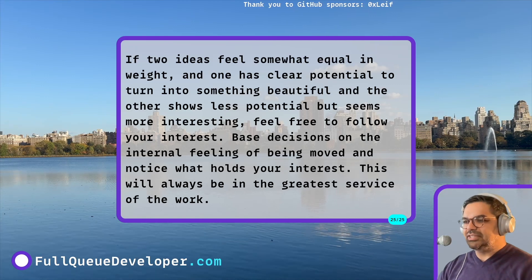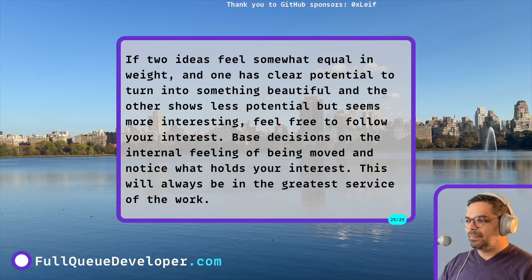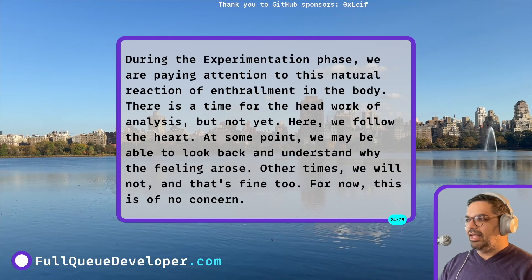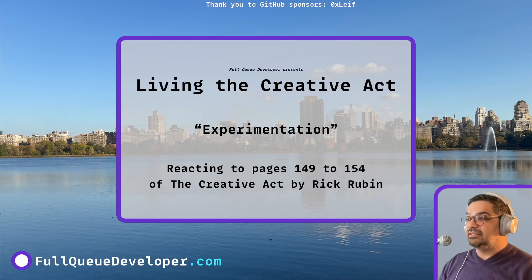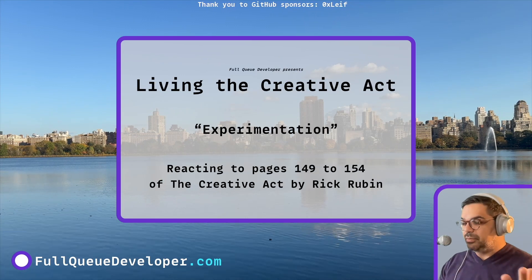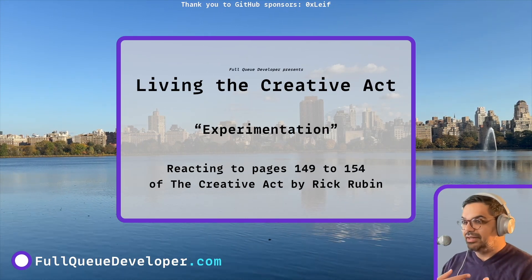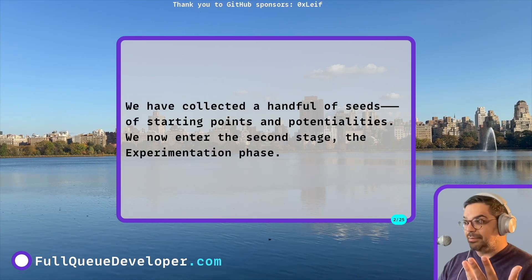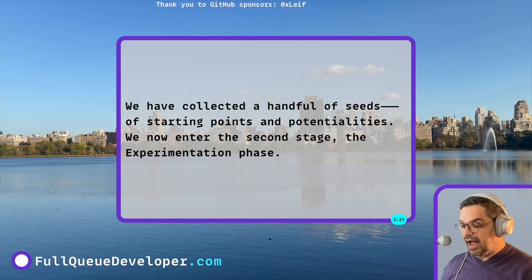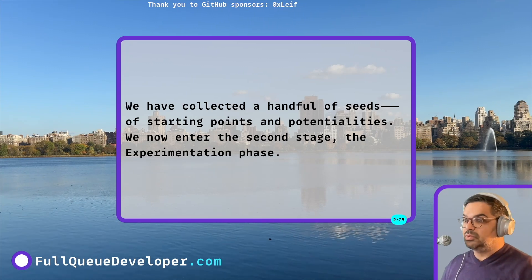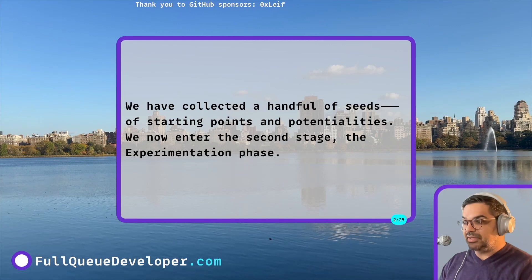I really, really love this book — this was such a fun section. He's building off what he talked about last week with the seeds: gathering a whole bunch of them and then choosing a few to spend time with. And in this experimentation chapter, he's talking about different ways to approach that, which he's calling the experimentation phase.